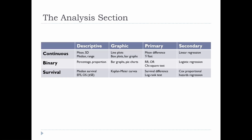For continuous data: your descriptive statistic is mean and standard deviation if normally distributed, or median and range if not. Your graphical representation is line plots, box plots, and bar graphs. Your primary outcome measure is the mean difference — for example, a mean headache score of 7.5 with medication versus 9.5 without. The hypothesis test would be a t-test if normally distributed. For secondary analysis — adjustment for confounders — you would use linear regression.